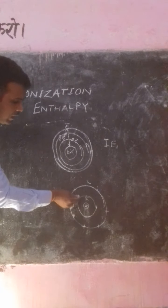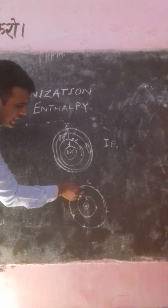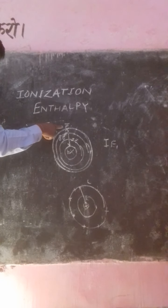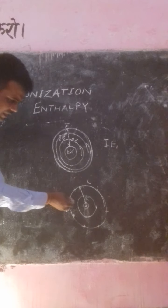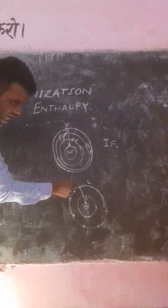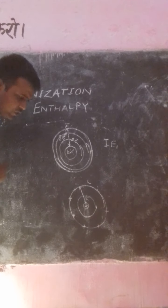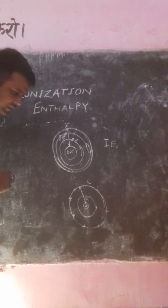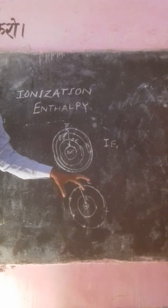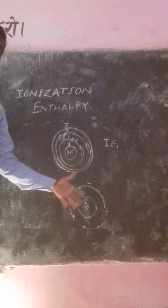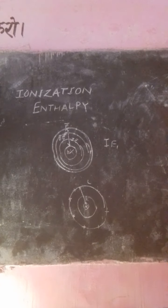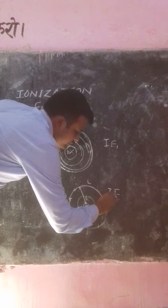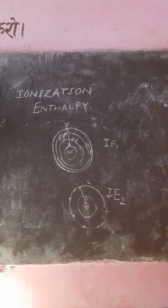Now you can see that the L-shell electron is more close to the nucleus as compared to the M-shell electron. It means the electron in L-shell will be strongly held by the nucleus — the nuclear pull will be stronger. In this way, the electron will be strongly held with the nucleus and more amount of energy will be required to release it. That is why IE2 is greater than IE1.